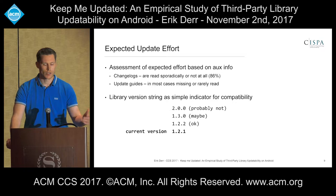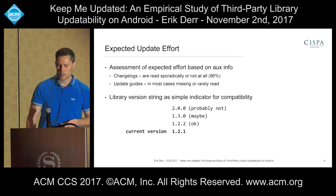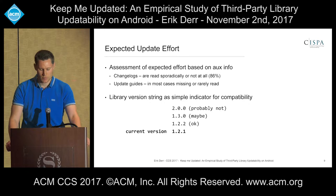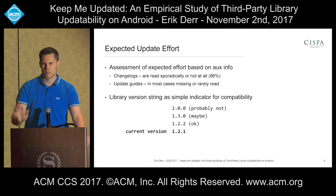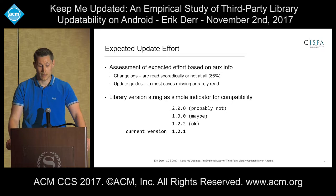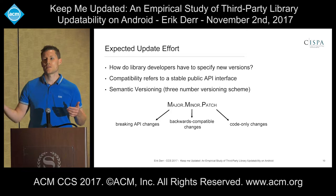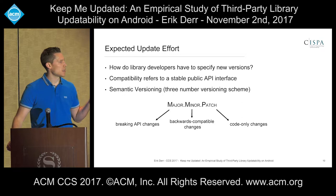So what is a good piece of information that is always there and can reliably be used by application developers to infer compatibility? The simple answer is the library version string. For example, imagine you have a library in version 1.2.1. If a new version 1.2.2 comes out, you'd probably agree it's compatible because it looks like a tiny change. If version 1.3 comes out, maybe it still works. But as soon as you have a major version 2.0, you'd say this does not look compatible. But there were a lot of maybes — so how must a library developer specify a version such that the consumer can reliably infer compatibility, meaning a stable public API interface?